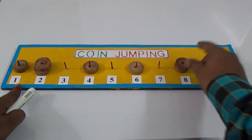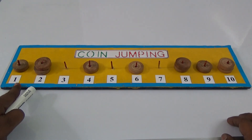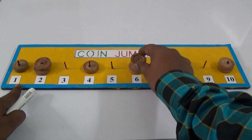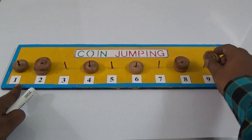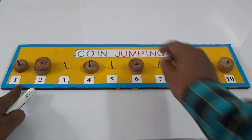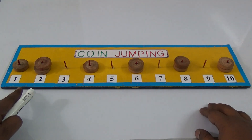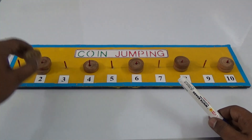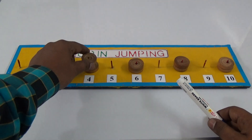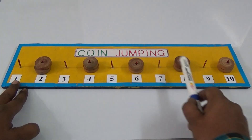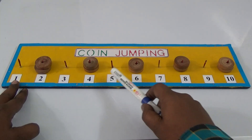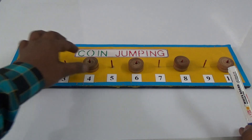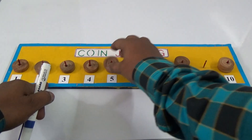From three, jump over four and six to reach eight — that's the third step. Next, taking nine to the left: from nine, jump over eight and seven to reach six — that's the fourth step. Last step: from one, jump over two and three to reach four. That's it — one, two, three, four, five — only five steps to complete the puzzle solution.